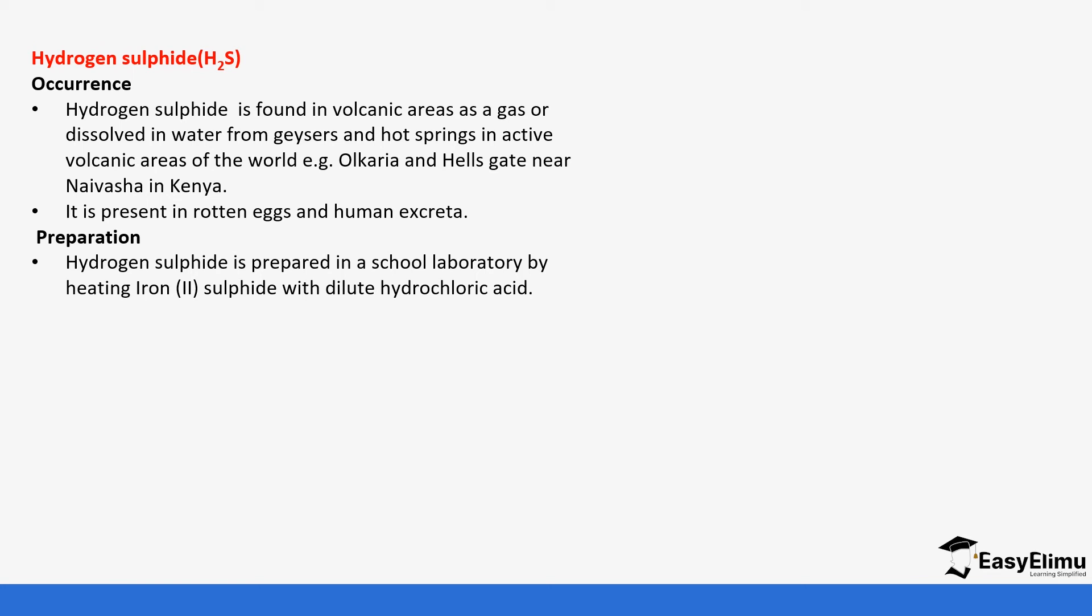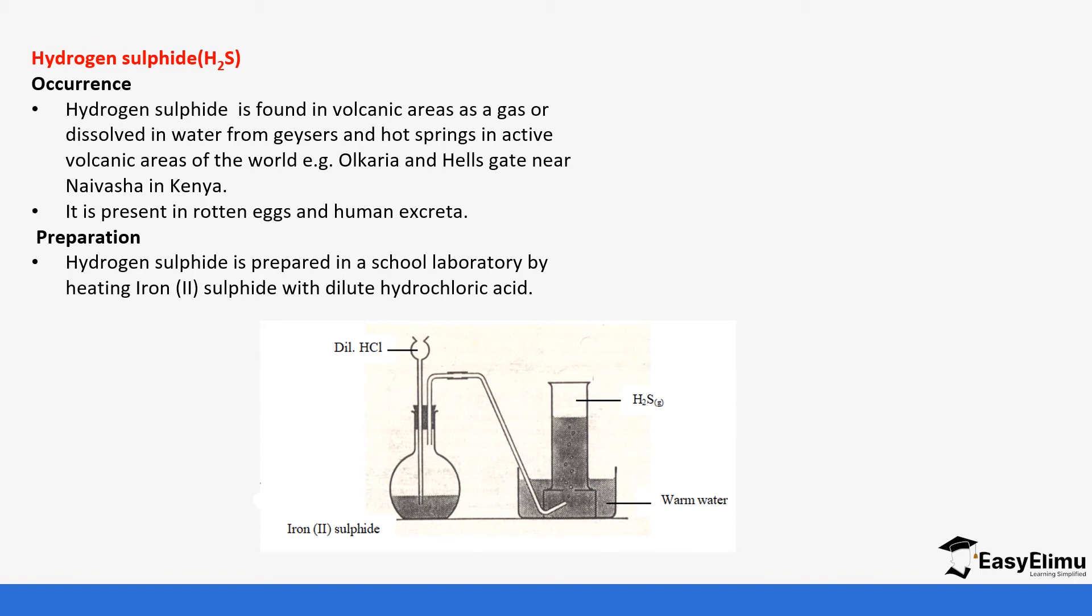It's usually prepared in the laboratory by heating iron sulfide with dilute hydrochloric acid. So dilute hydrochloric acid is added to a flat bottom flask containing iron sulfide.